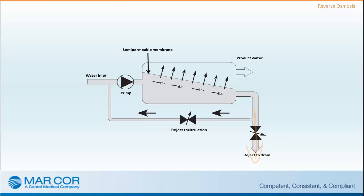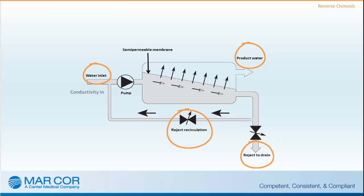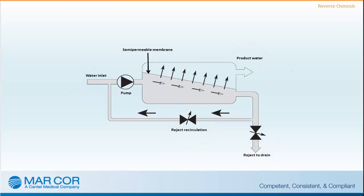The CWP displays feed water flow rates, product water flow rates, RO reject and return flow rates. Conductivity of the feed water and product water are also displayed. Recovery rate and rejected flow rates are displayed in percentages for monitoring the CWP reverse osmosis parameters and process.